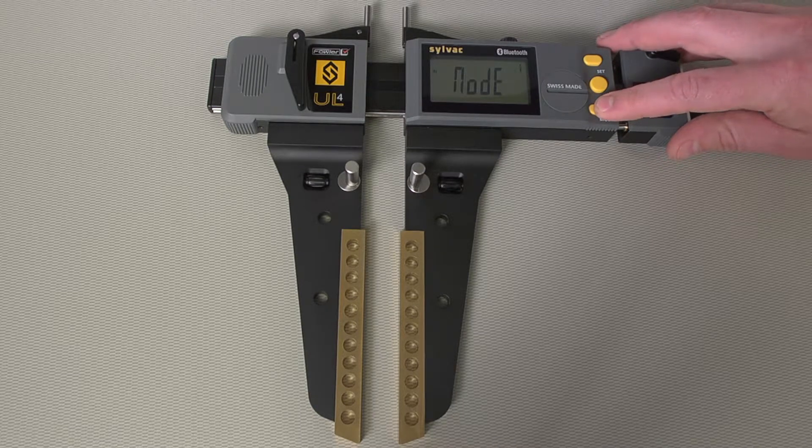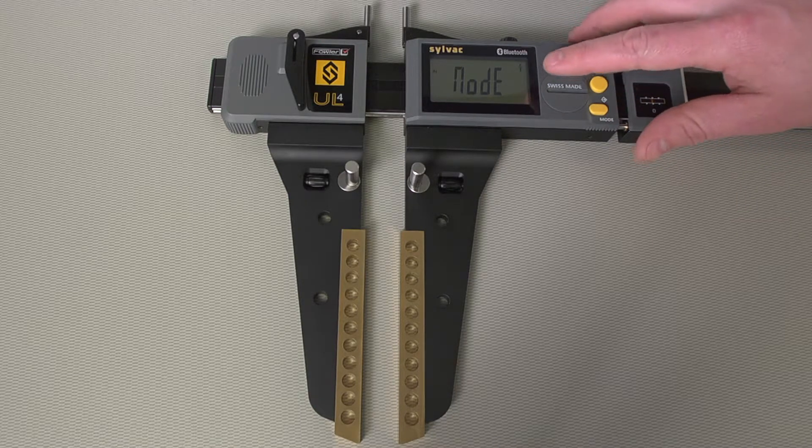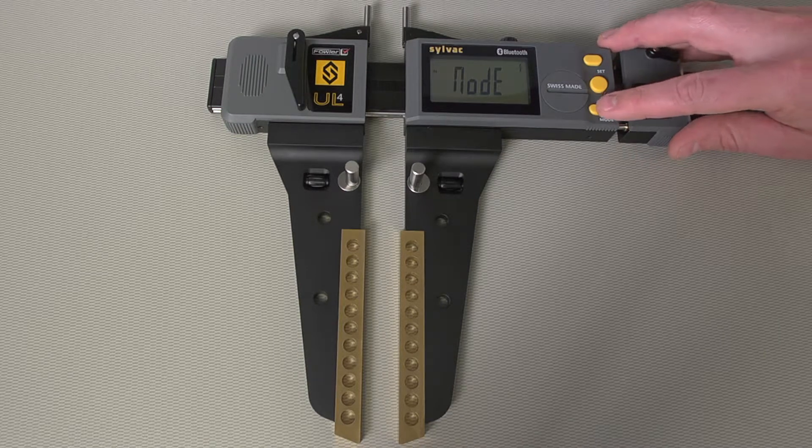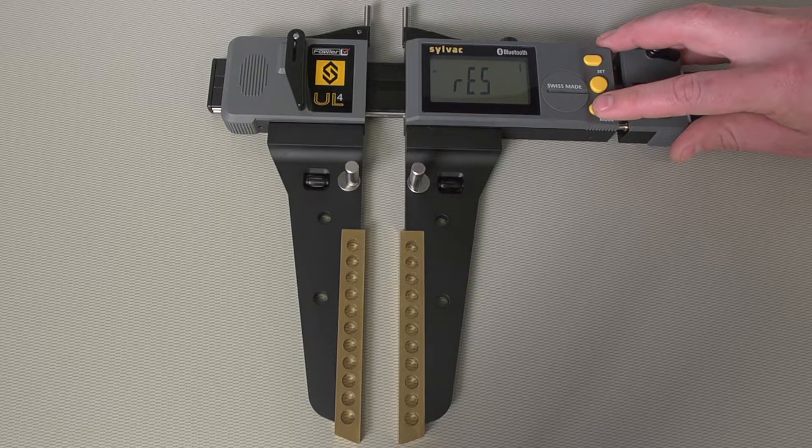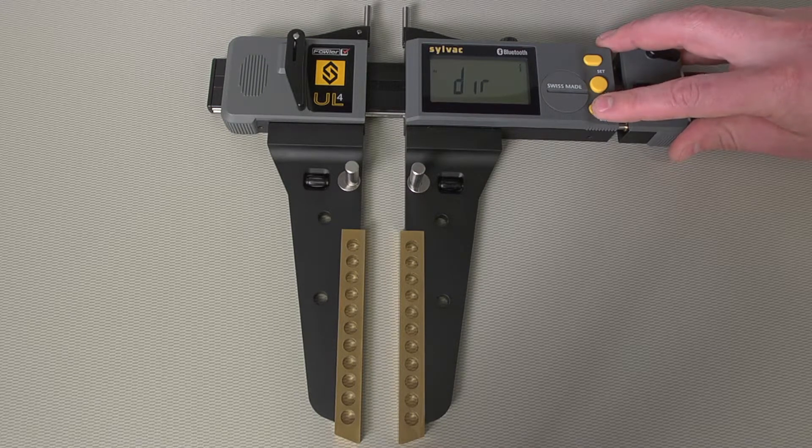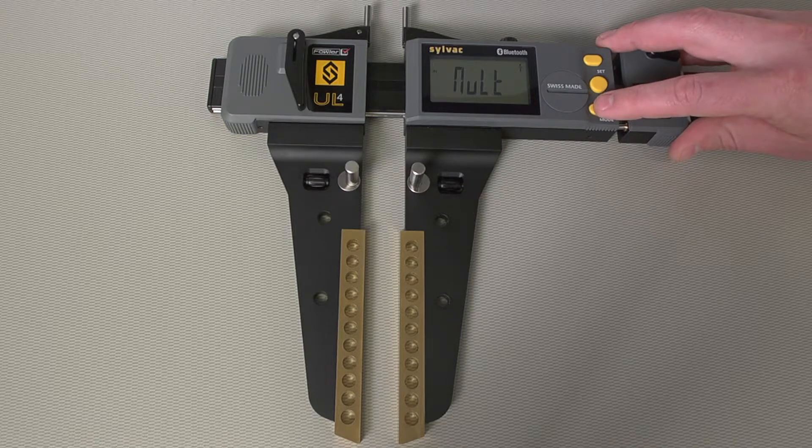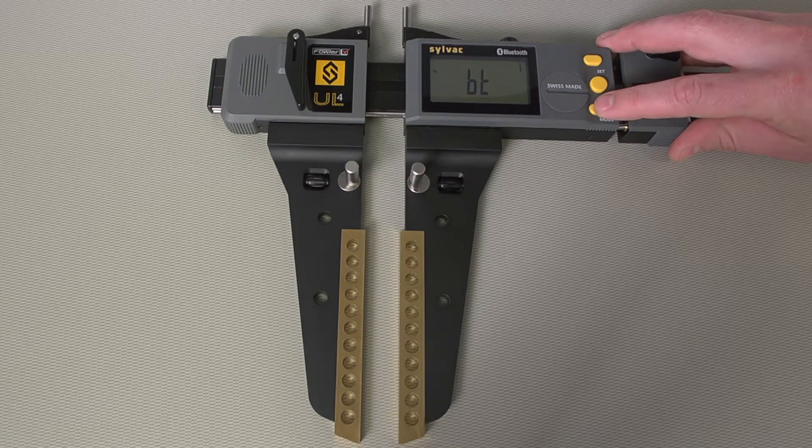Or for a long press, you enter the deeper menu, where you can change to min, max, or delta mode, set up tolerances, change the resolution, change the measuring direction, apply a multiplicative factor, turn the unit off to save battery, lock the keypad, or configure the Bluetooth communication.